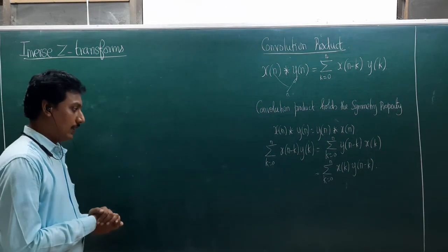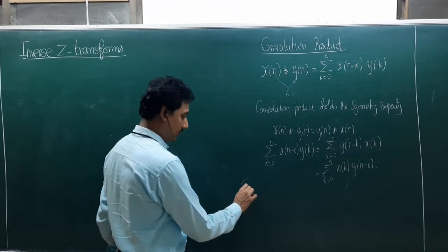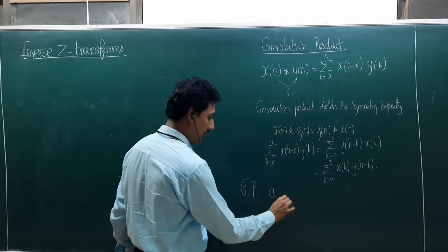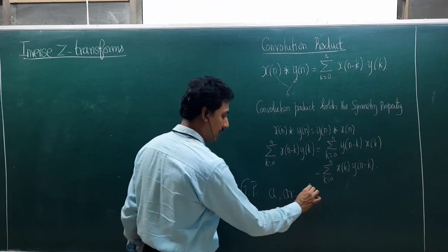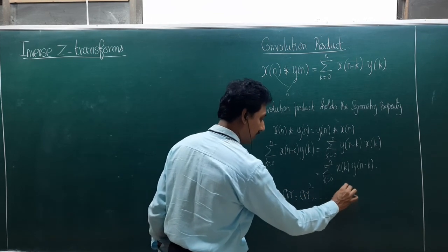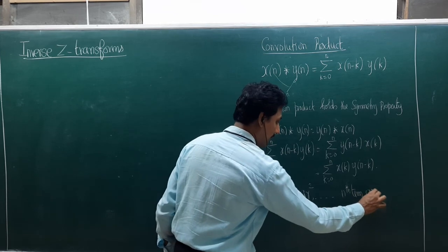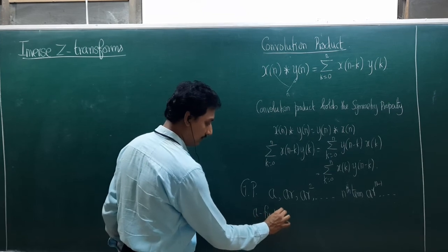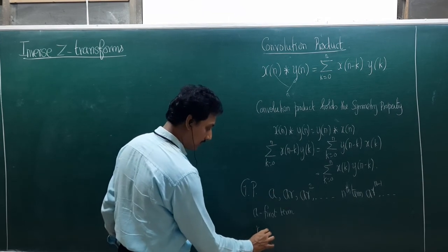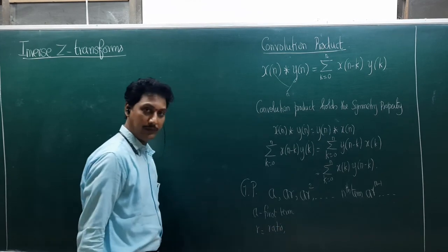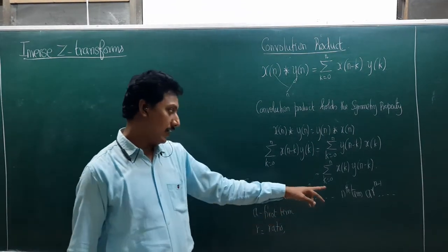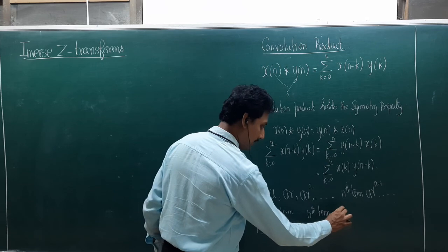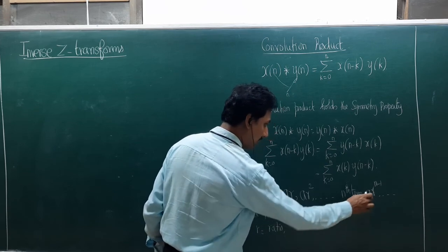Now, apart from that, if you remember the geometric progression: the first term is a, the second term is ar, the third term is ar², and so on. The nth term of the geometric series is a·r^(n-1). Here a is called the first term or leading term, and r is called the ratio. The nth term is a·r^(n-1). Clear?